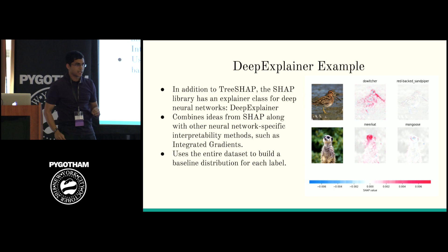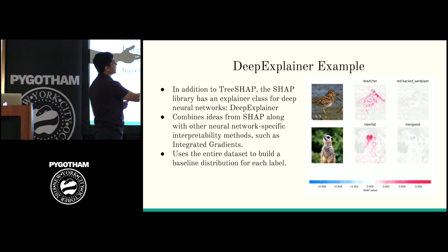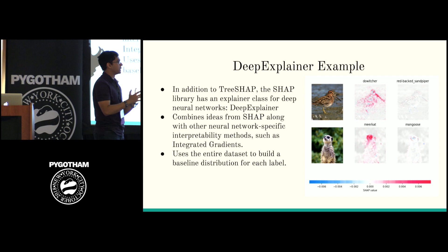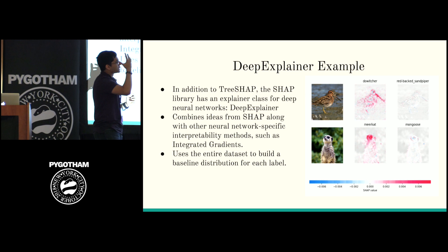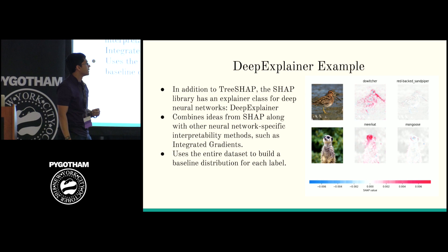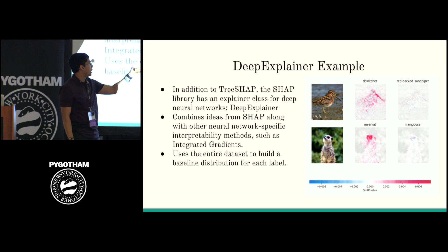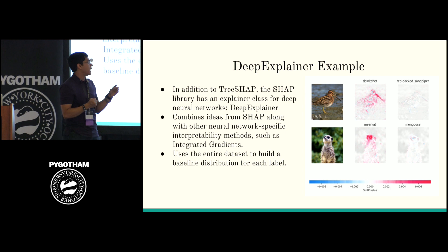With LIME, you just look at one point in isolation. With the deep explainer, you need to use the rest of the dataset as the baseline. So if the dataset is filled with meerkats, that's the baseline — 90% meerkats — and then we move up or down from that. Here's an example: a picture of a meerkat, where everything in red shows what really makes it a meerkat. We really believe it's a meerkat because of these face pixels — if you change those, the algorithm doesn't think it's a meerkat anymore. You can also compare against other labels, like why this meerkat picture doesn't look like a mongoose.